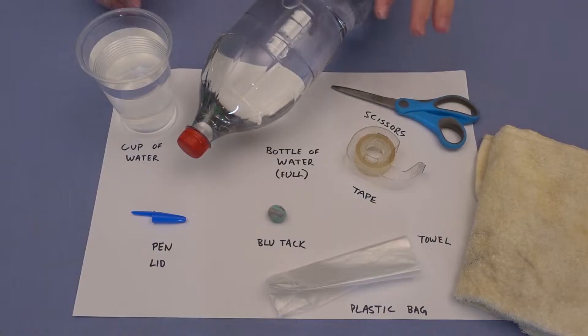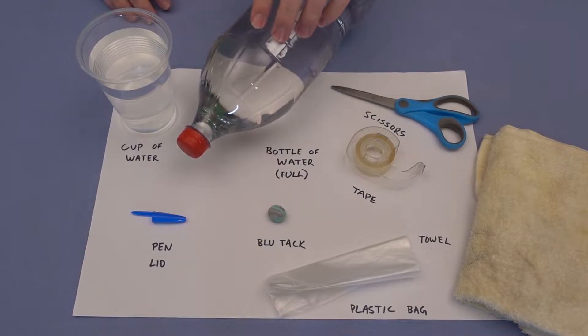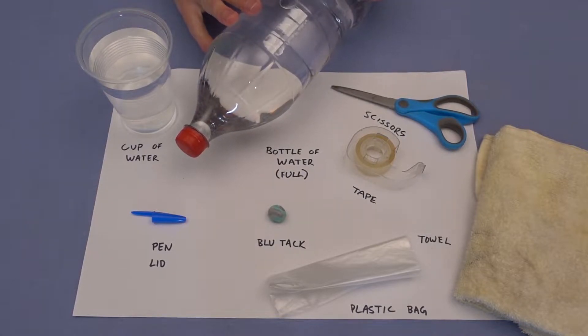G'day everyone, today I want to show you how to make a dancing jellyfish in a bottle. Let's check out what we're going to need. You'll need a bottle of water that's completely full. I'm using a two liter bottle here, you could use a smaller bottle though.